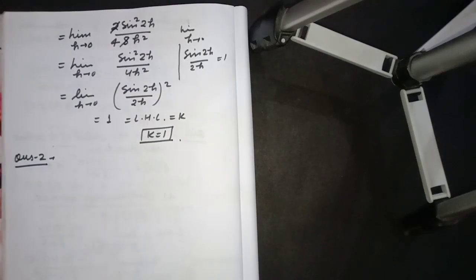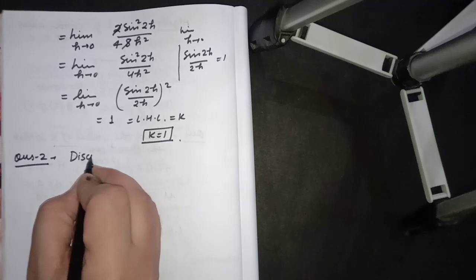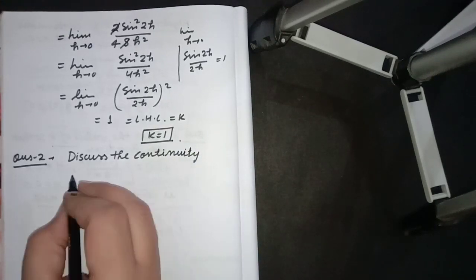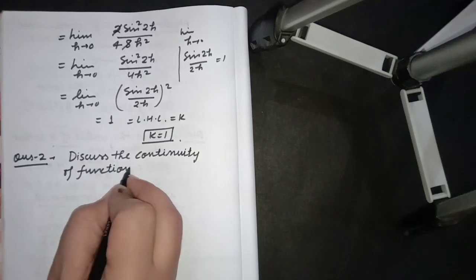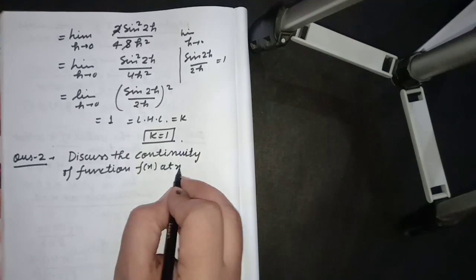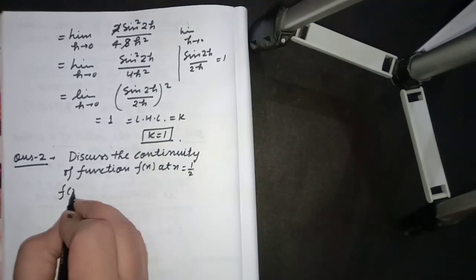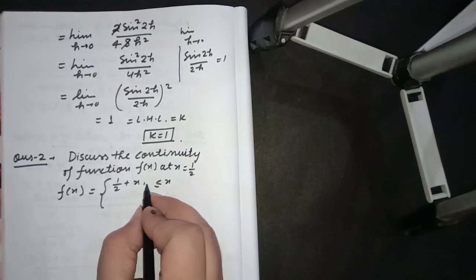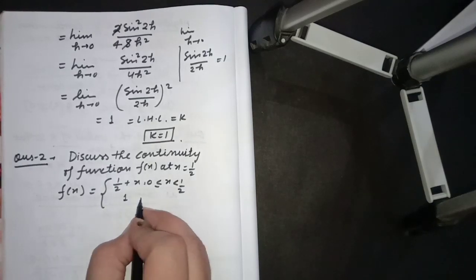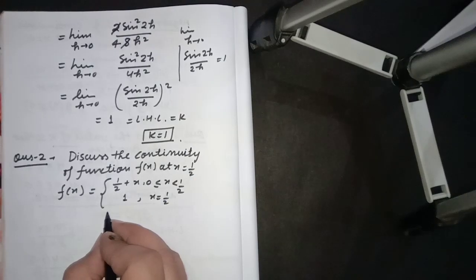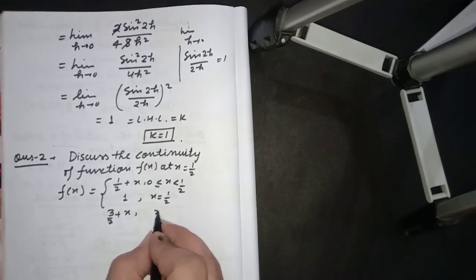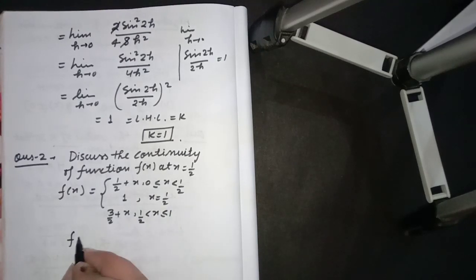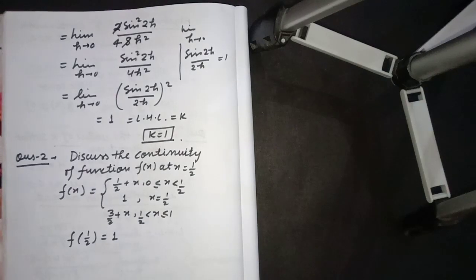Now a second question: discuss the continuity of the function f(x) at x = 1/2, where the function is defined in three parts: f(x) = (1/2 + x) when x is between 0 and 1/2; f(x) = 1 when x = 1/2; and f(x) = (3/2 + x) when x is between 1/2 and 1. First, we find f(1/2): clearly that value equals 1.